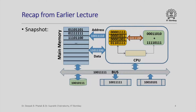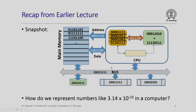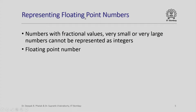This is a picture we have seen earlier — the basic structure of our simple computer with different parts, and at any snapshot of operation of this computer you will see sequences of 0s and 1s everywhere. So what we want to ask is: how do we represent numbers like 3.14 or 10 raised to –23 in a computer using sequences of 0s and 1s? These are called floating point numbers — numbers with fractional values, very small numbers or very large numbers that cannot be represented as integers.